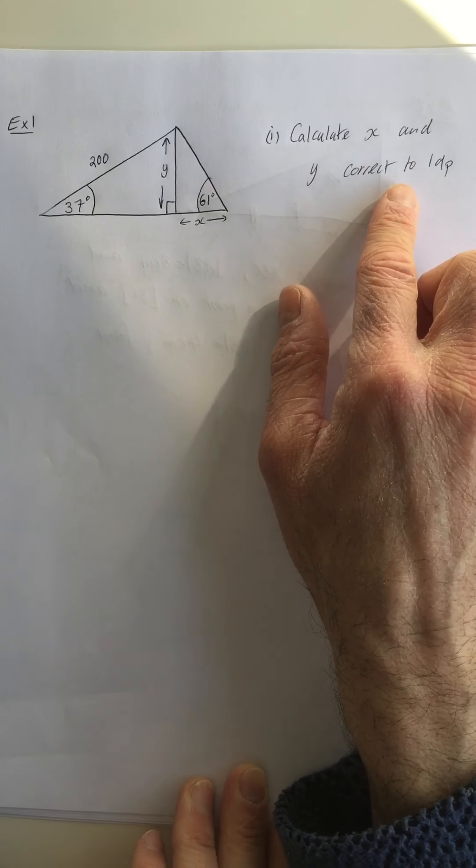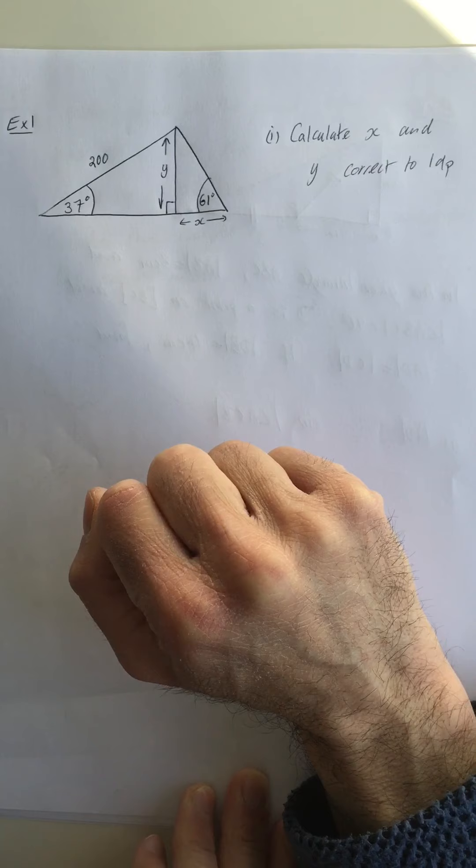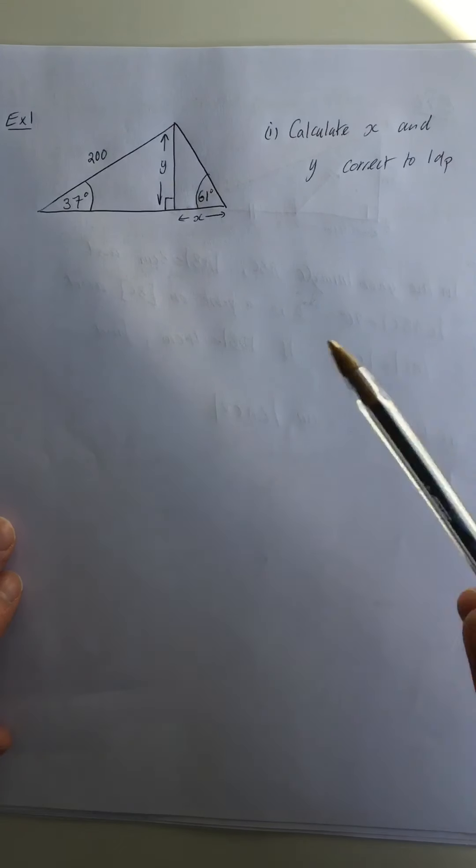Now the key here is whenever you're faced with a problem like this, you need to read the question a few times and look carefully at the picture. If you see more than one triangle, I want you to get into the habit of splitting the shape into triangles—imagine cutting the shape up into triangles and drawing each triangle on its own.